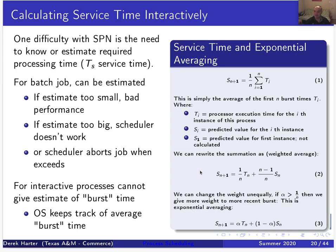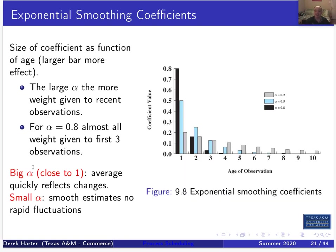If N is 10, you use one-tenth of the weight for the most recent observation and nine-tenths for the previous nine. But you could use something bigger — an alpha of 0.5 or even 0.9 — making you more responsive to the last burst time when estimating the next. Figure 9.8 from the textbook illustrates that the higher the alpha, the more weight you give to recent observations.